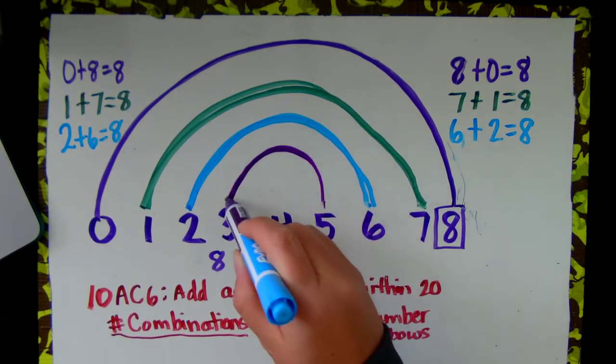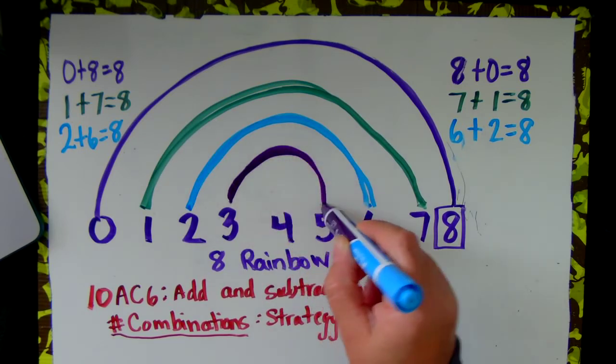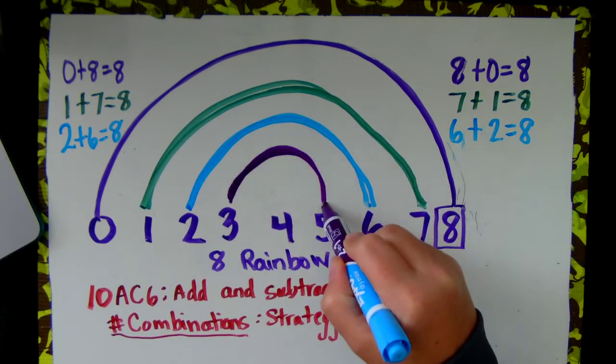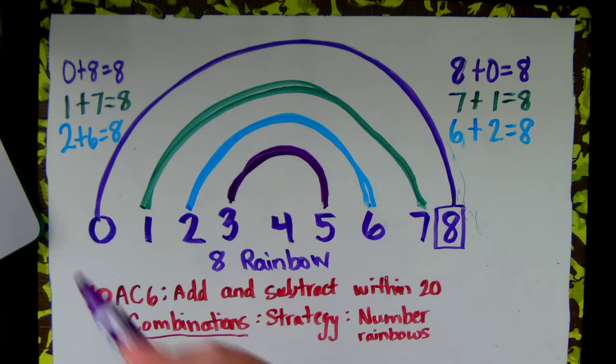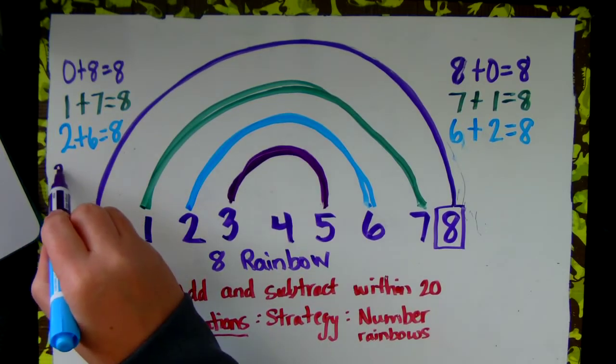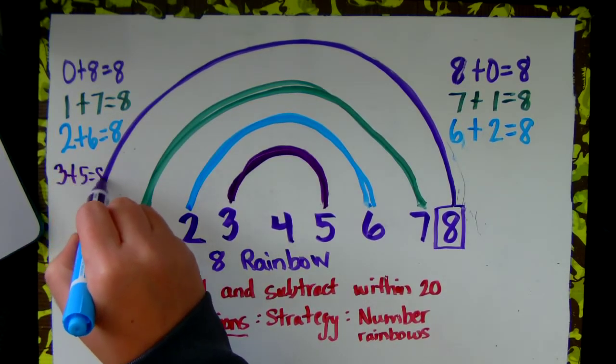5 plus 3 equals 8. 5 plus 3 make 8. And 3 plus 5 equals 8.